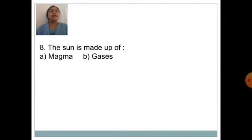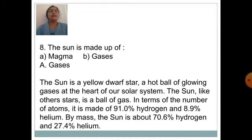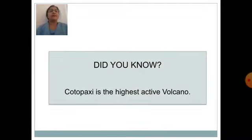The sun is made up of — option A: magma, option B: gases. Answer is option B: gases. The sun is a yellow dwarf star, a hot ball of glowing gases at the heart of our solar system. In terms of the number of atoms, it is made of 91% hydrogen and 8.9% helium. By mass, the sun is about 70.6% hydrogen and 27.4% helium. Fun fact: Cotopaxi is the highest active volcano.